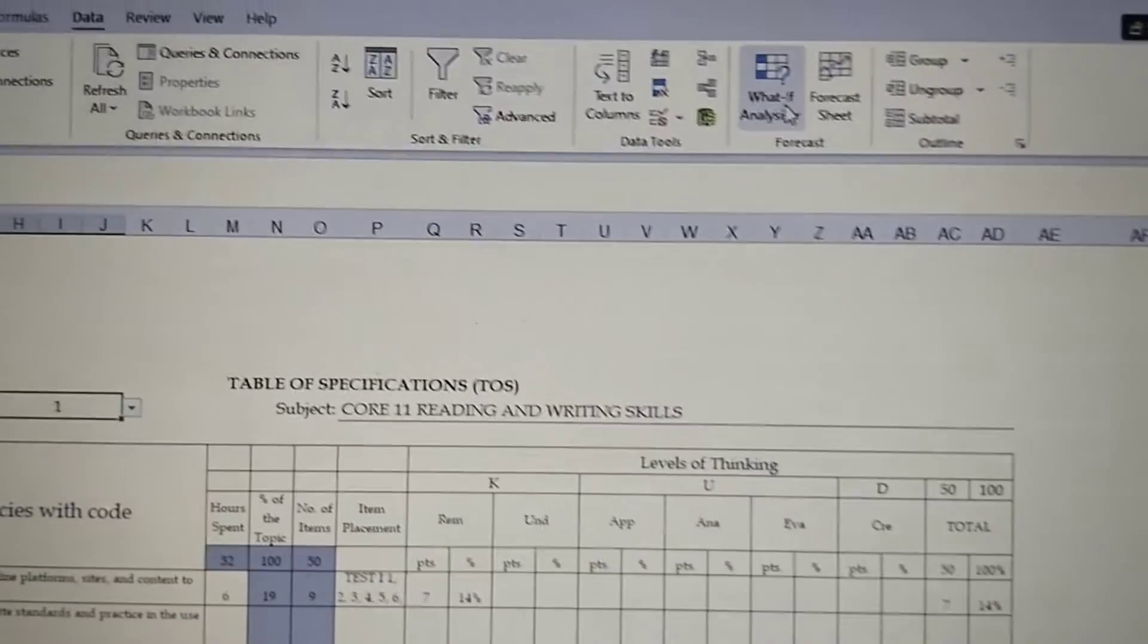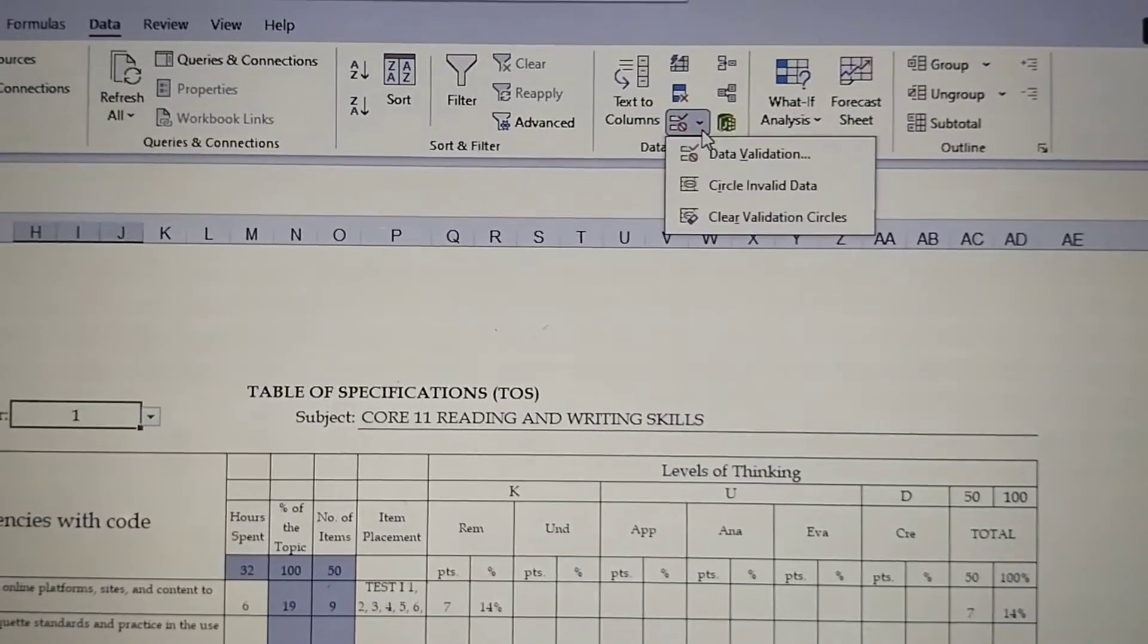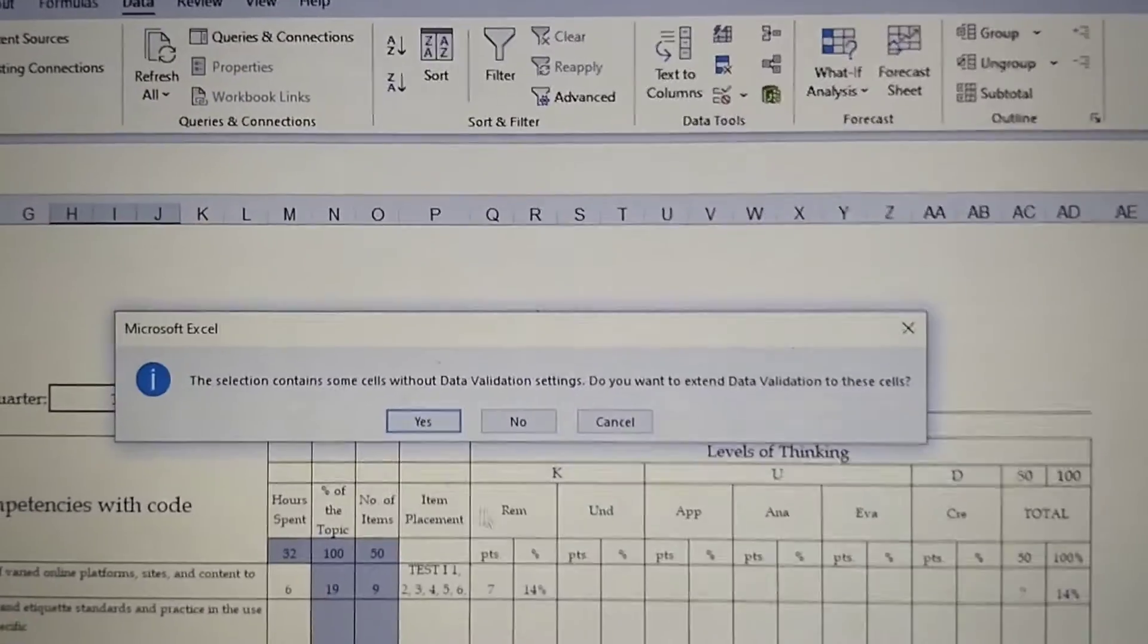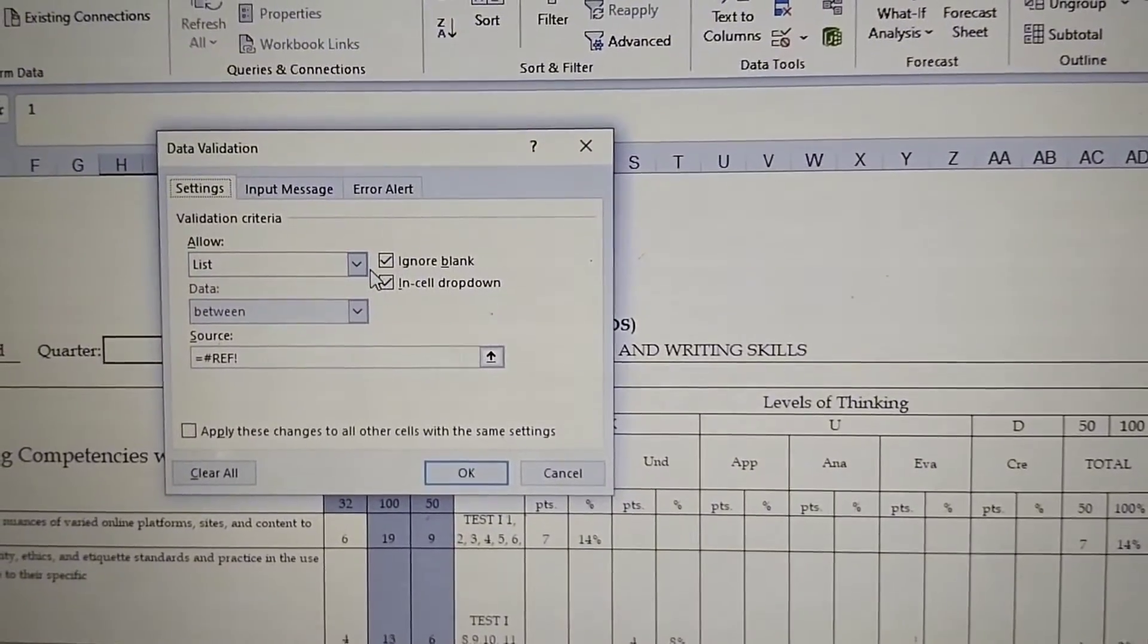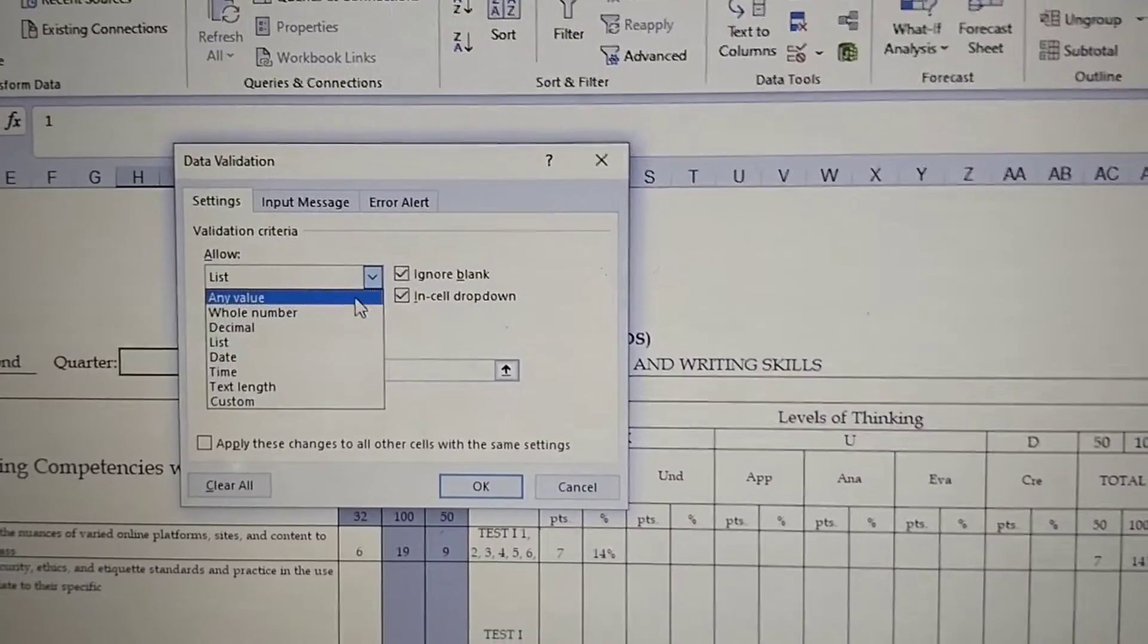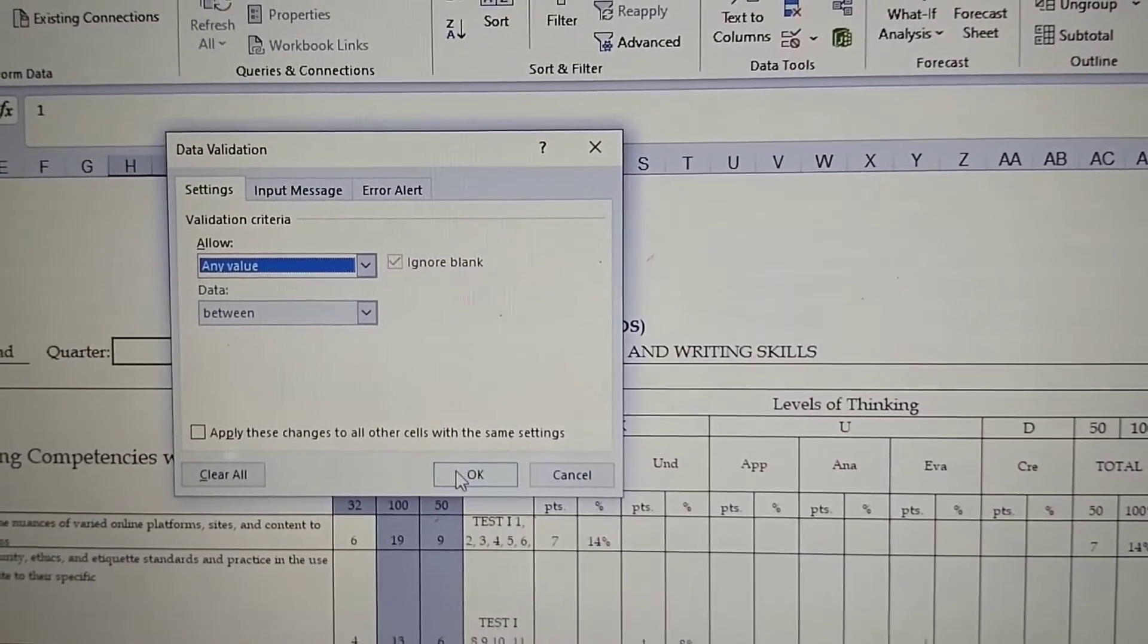And then just the same process - we go to Data and then Data Tools here, and then of course Data Validation and then click on Yes. And then after that just the same thing, click on Any Value and then after that just click OK.